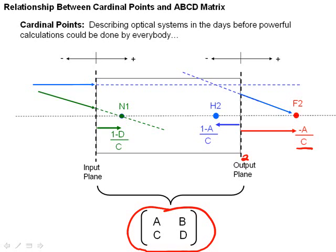H2, and N2 would be measured from the output plane or plane number 2. F1, H1, and N1 would, of course, be measured from the input plane or side number 1. So the point of all of this is that if you know the cardinal points, you can do some simple algebra and calculate the ABCD matrix. If you know the ABCD matrix, you can easily calculate the cardinal points and know how the system behaves in a general sense,